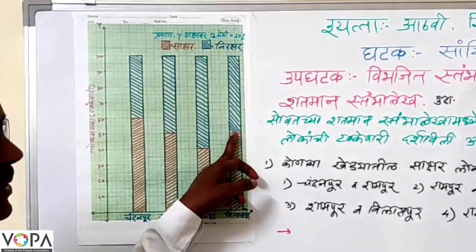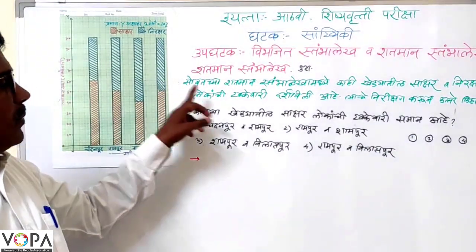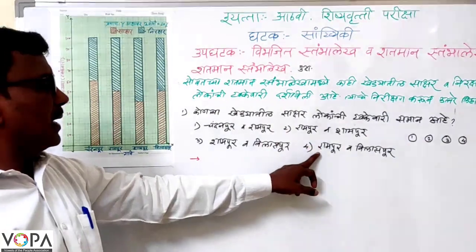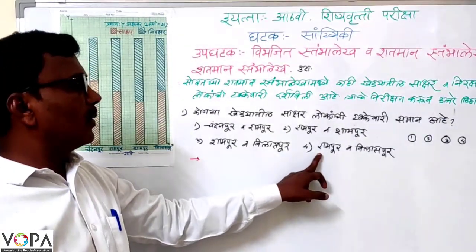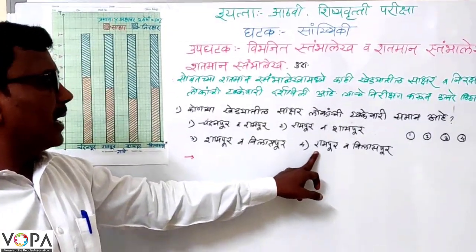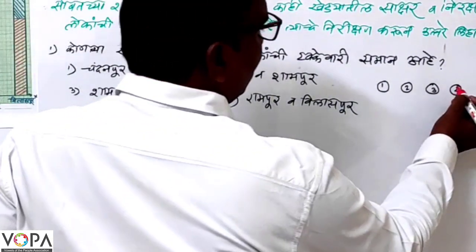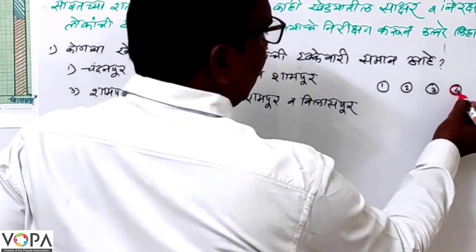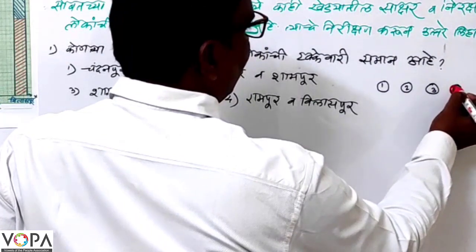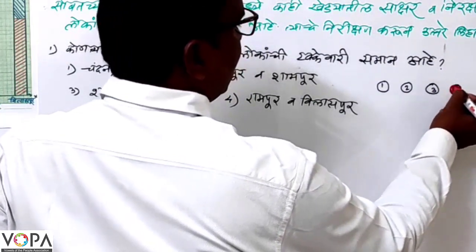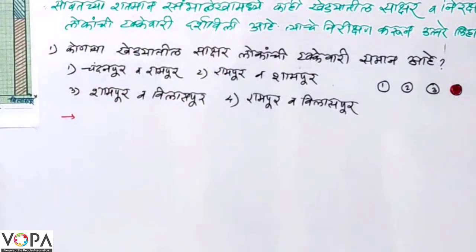That is when we have seen the point in frame. Since this point, the point is called Rampoor with Vilaaspur. But since we have an object, the artist would be with Rampoor and Vilaaspur. Thank you so much.